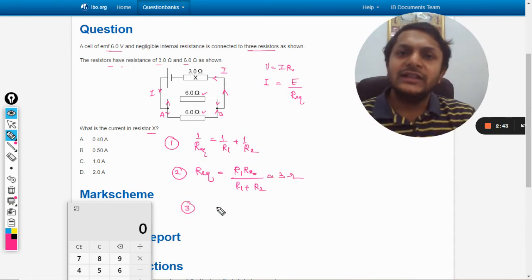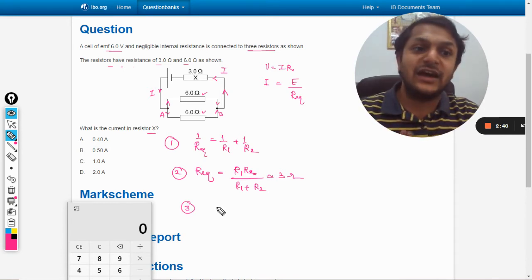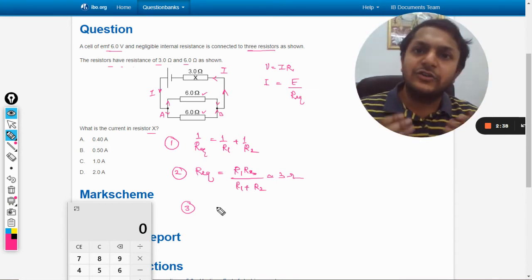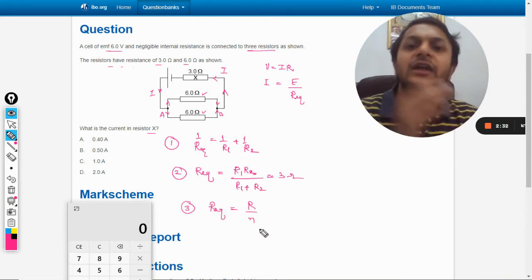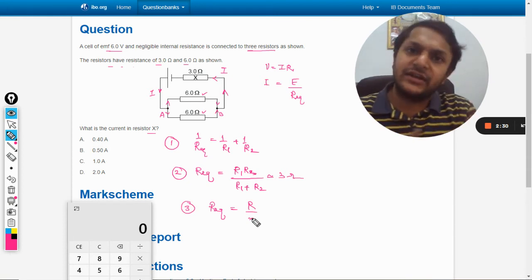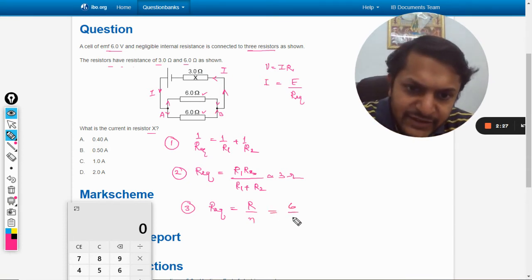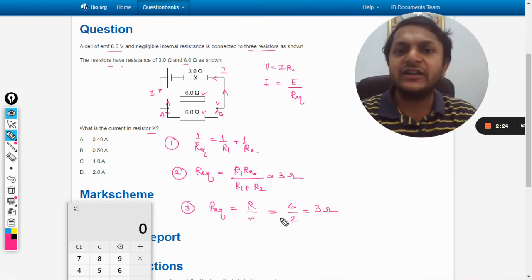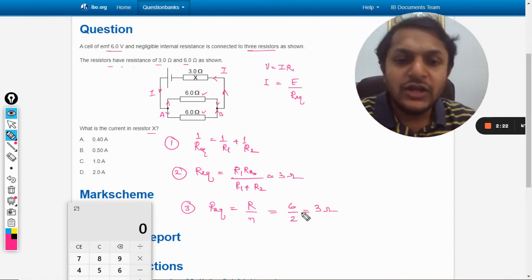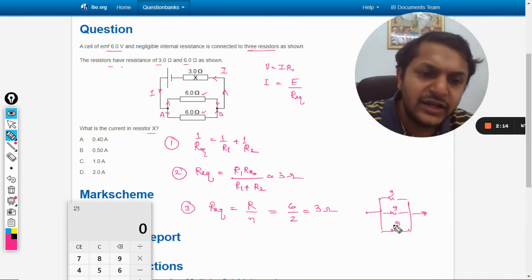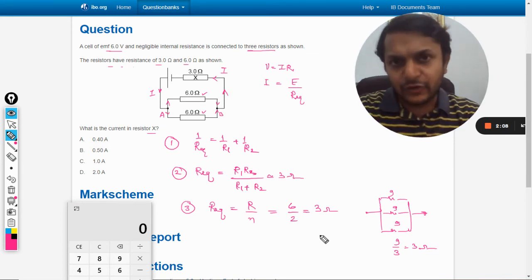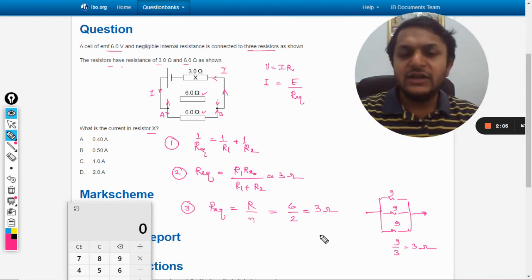There is a third method also. This method is used when equal resistances are connected in parallel, whether 2, 3, 4 or 5. The R equivalent becomes the resistor divided by number of resistances which are connected in parallel. For example, in this case it will be 6 by 2, so directly we half it and it will become 3 ohm. If we take another example: this is 9, this is 9, this is 9, so the R equivalent of this is 9 by 3, that is 3 ohm. So this is a very quick calculation, a very quick method to do it.